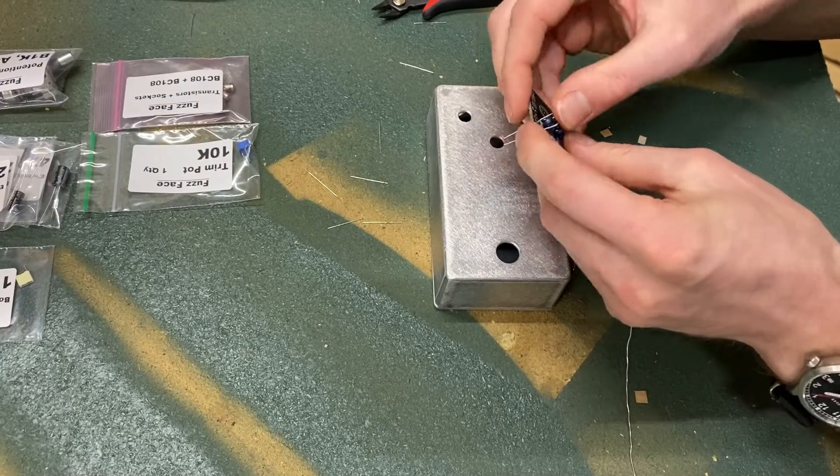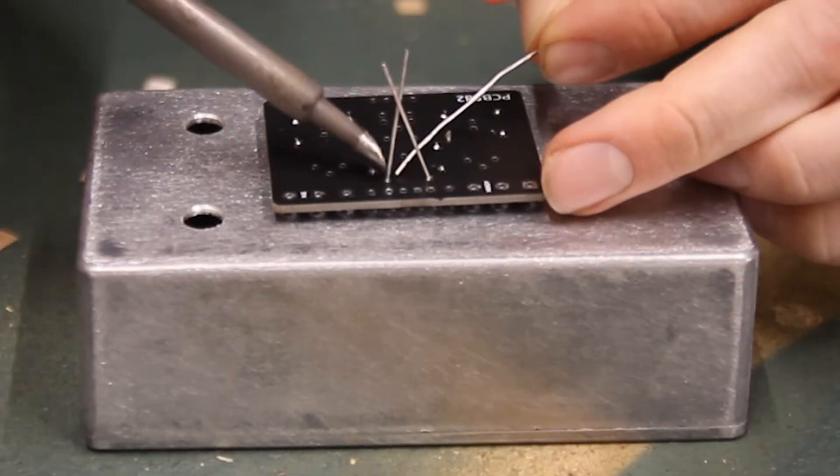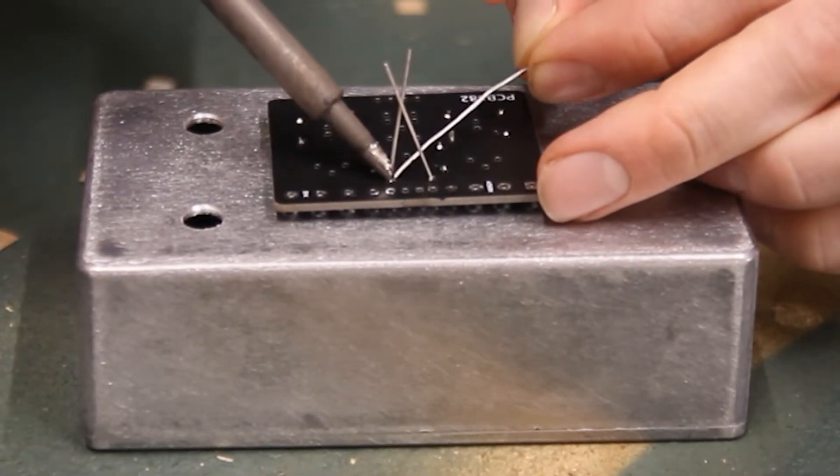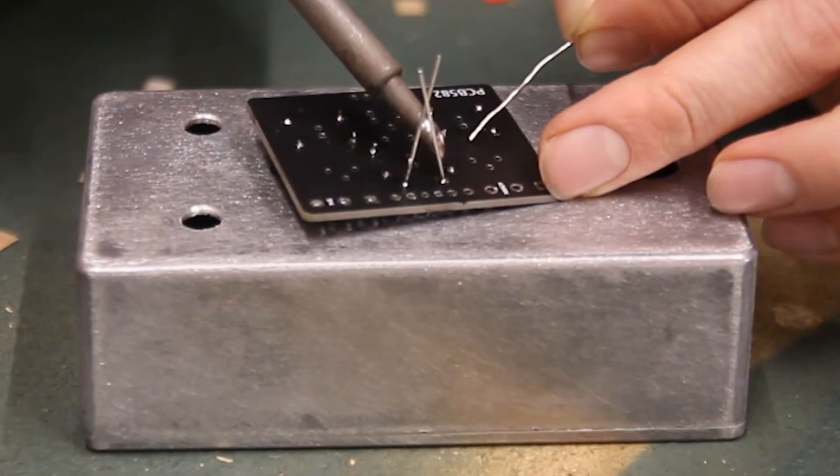Load the diode into the board, oriented the correct way, and solder it in just like the resistors. Touch the iron to the pad and leg and add solder until it flows.